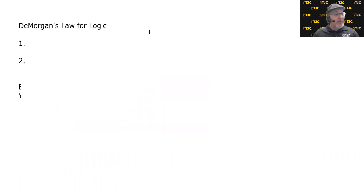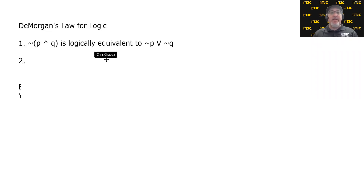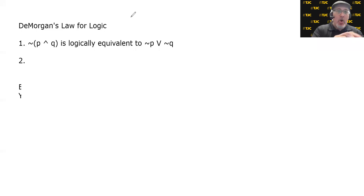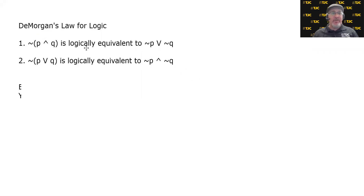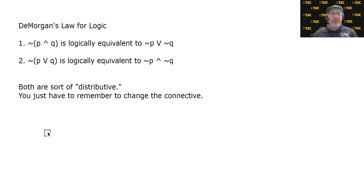Let's summarize DeMorgan's Laws for logic. Number one: the negation of P conjunction Q is logically equivalent to the negation of P disjunction the negation of Q. It has a distributive flair — the negation gets distributed to the two statements and also turns the conjunction into a disjunction. The second DeMorgan's Law is the same except you switch the connectives: the negation of a disjunction is logically equivalent to the conjunction of the negations. Both are sort of distributive — you just have to remember to change the connective.